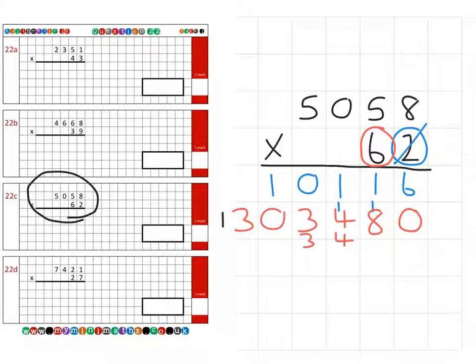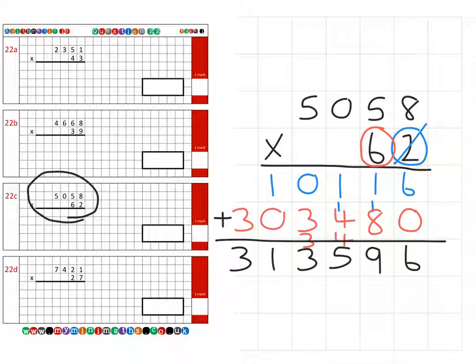And then we add the two rows together. 6 units and 0 units is 6. 1 ten and 8 tens is 9 tens. We have the 100 plus the 400 which is 500. 0 thousands and 3 thousand is 3 thousand. We have the single 10,000 by itself and 300,000. So we have a final answer of 313,596.